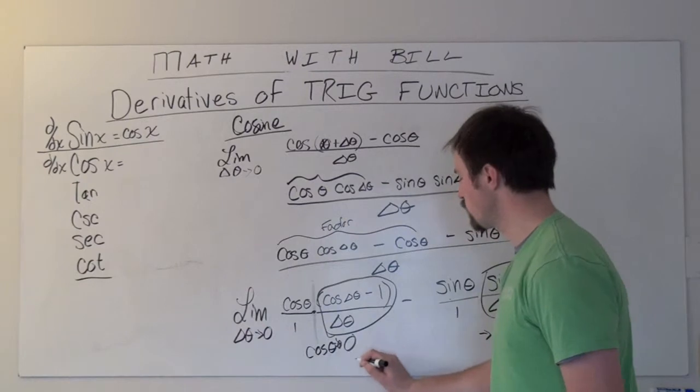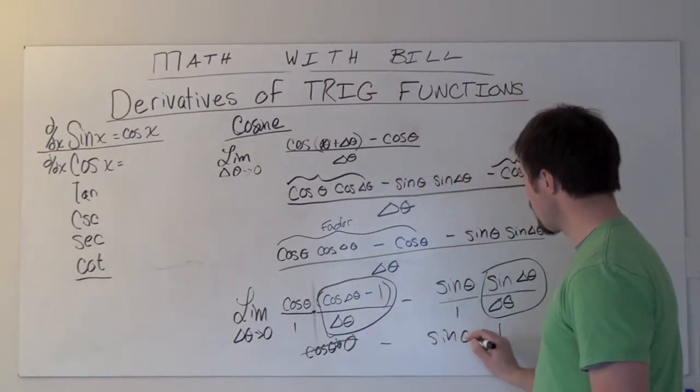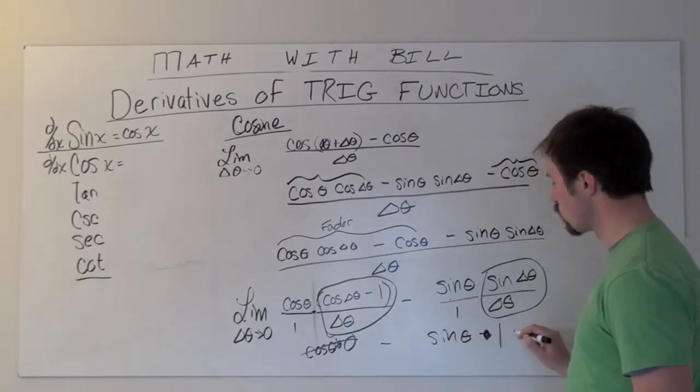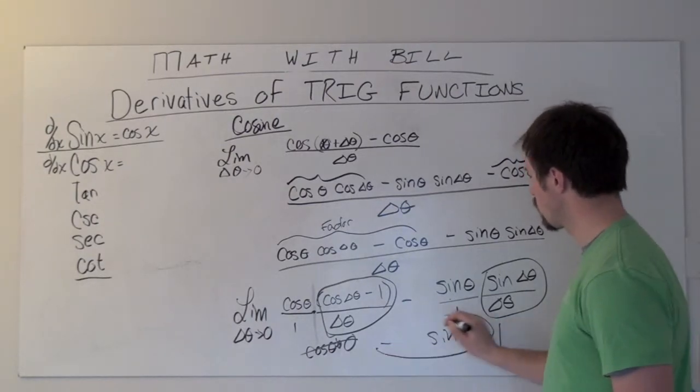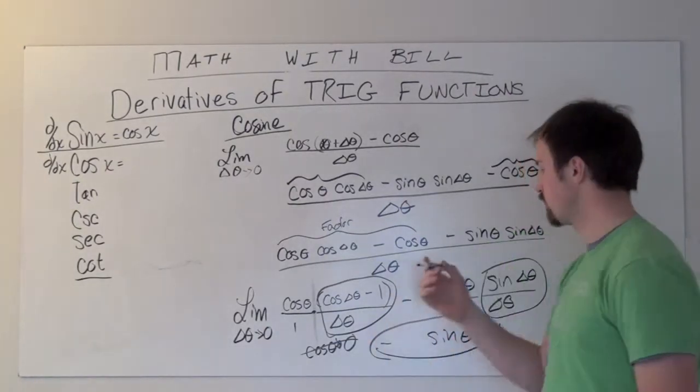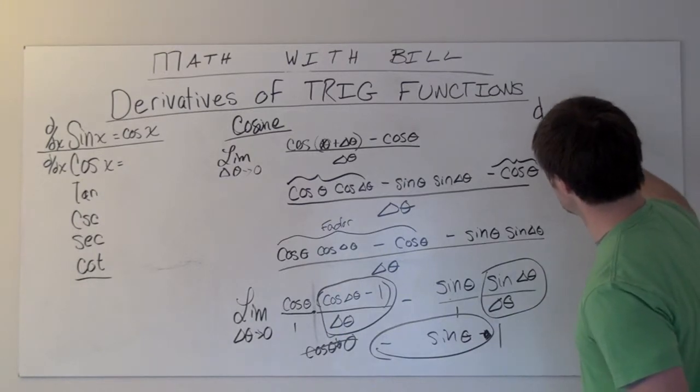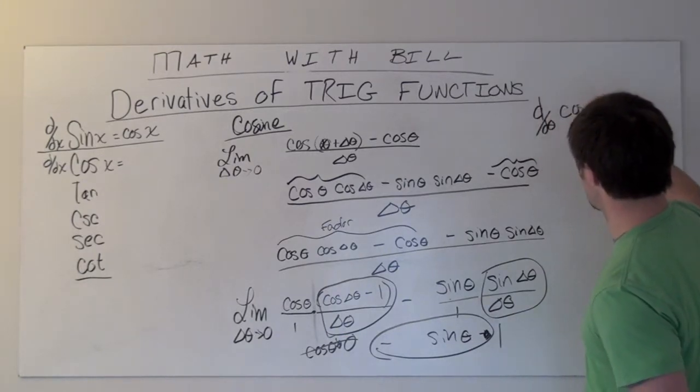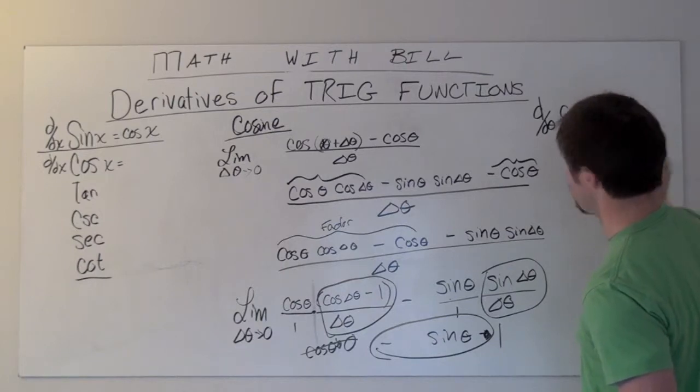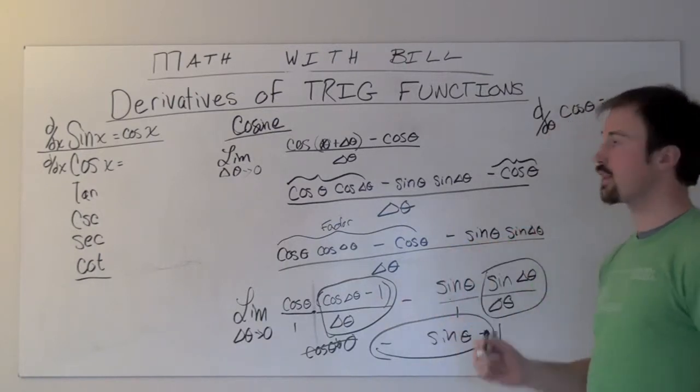What we end up with is cosine theta times zero (or nothing) minus sine theta times one (or the opposite of sine theta). So d/dθ of cosine theta is equal to—the derivative with respect to theta of cosine theta is the opposite of sine theta.